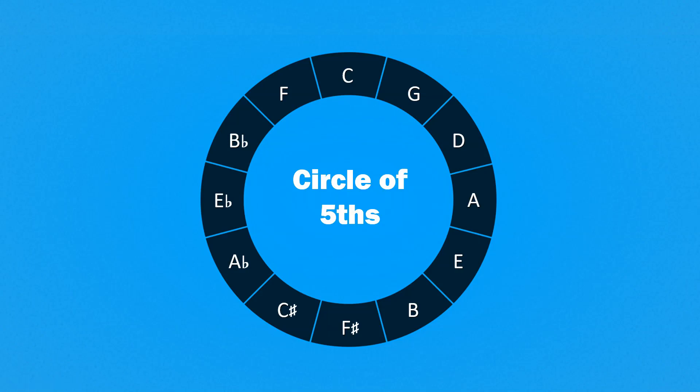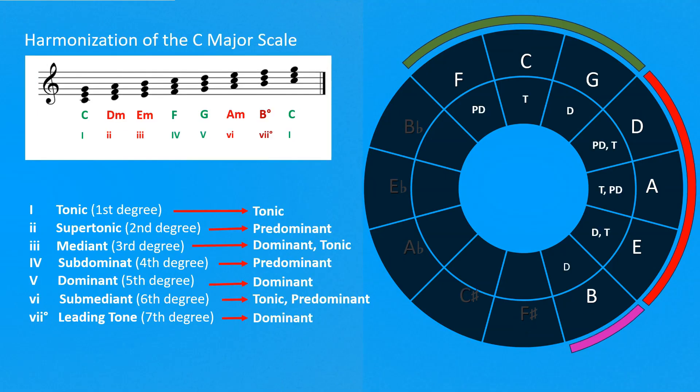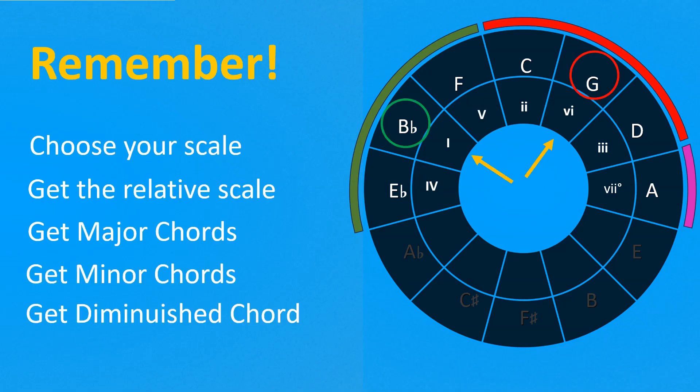Welcome to the fourth video of the series about the circle of fifths. In the last video we learned how to get the degree of a scale and the chords of a harmonized scale, how to get the function of the chords, how to transpose chord progressions, and a little trick to memorize everything easily and quickly.